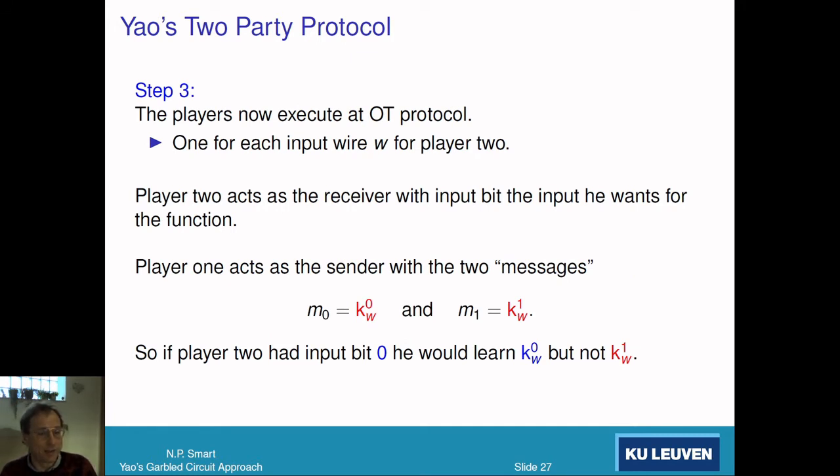Step 3 is we need to get the input corresponding to party 2 over to party 2. For every wire, he's got two possible values, 0 or 1. We want to send him the wire label corresponding to his specific input, and that's exactly what OT is. For every wire that player 2 has as input, player 2 is the receiver with a single bit. The sender has two wire labels K_W^0 and K_W^1. By the properties of the OT protocol, the receiver learns only the label for his chosen bit.